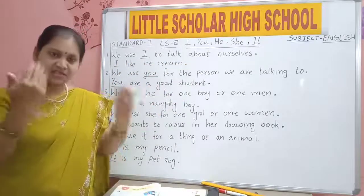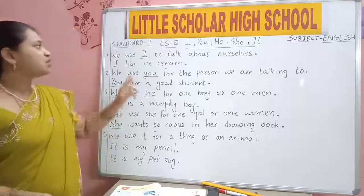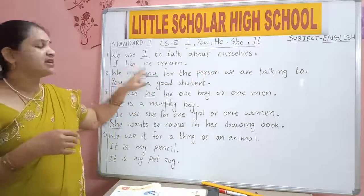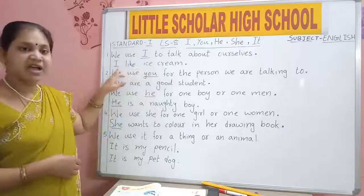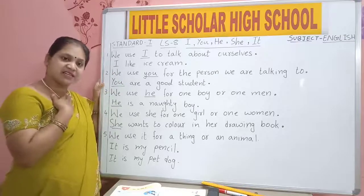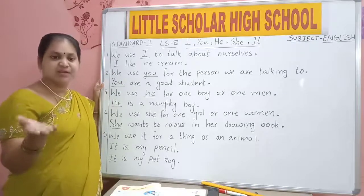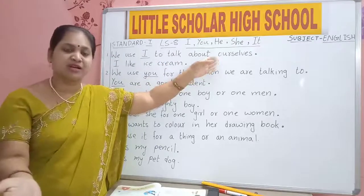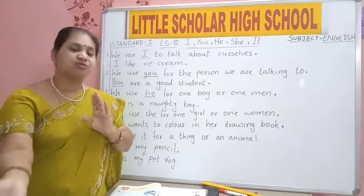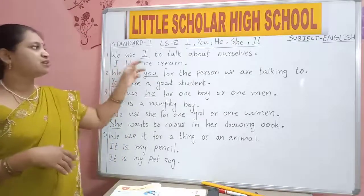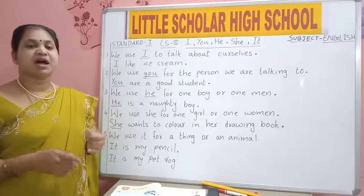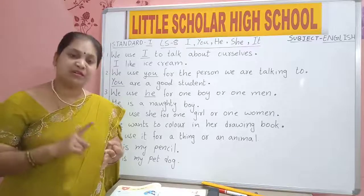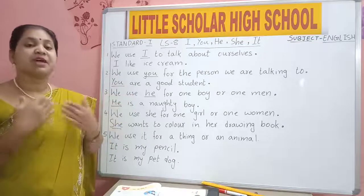When we are talking about ourselves — ourselves means you, yourself, myself — we use I. I like ice cream. Here we use I because you are saying about yourself. I am saying I like ice cream. You too will say I like ice cream. We use I to say something about ourselves. I like to watch cartoon. I like to complete my homework. All these sentences are used to say something about ourselves.